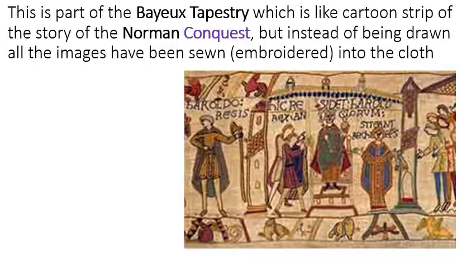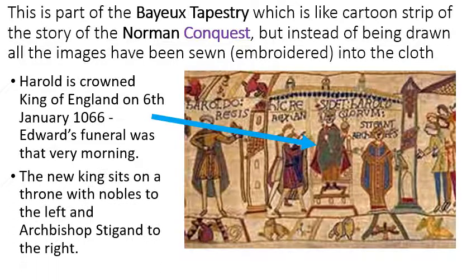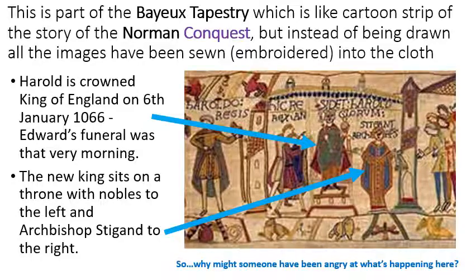Now you've had a chance to look at the image, it's part of the Bayeux Tapestry, which is like a cartoon strip of the story of the Norman Conquest, but instead of being drawn, all the images have been carefully sewn or embroidered into the cloth. The piece we're looking at shows King Harold being crowned as King of England after the funeral of the previous king that morning. He's sitting on his high throne, sceptre and orb in hand, with nobles to his left and Archbishop Stigand on the right, who performed the ceremony. But why might someone have been angry at this?